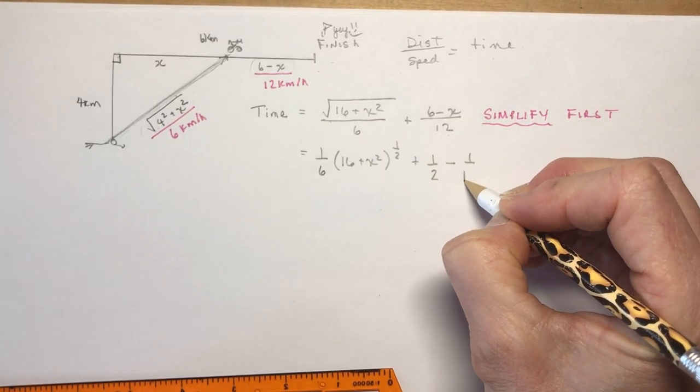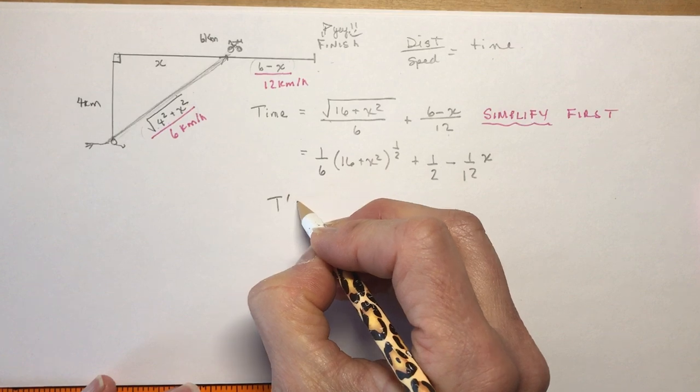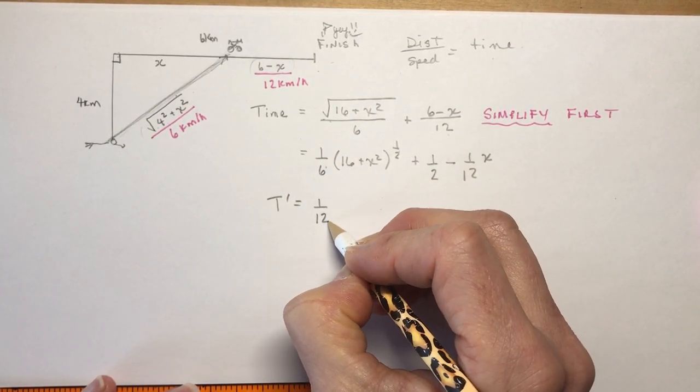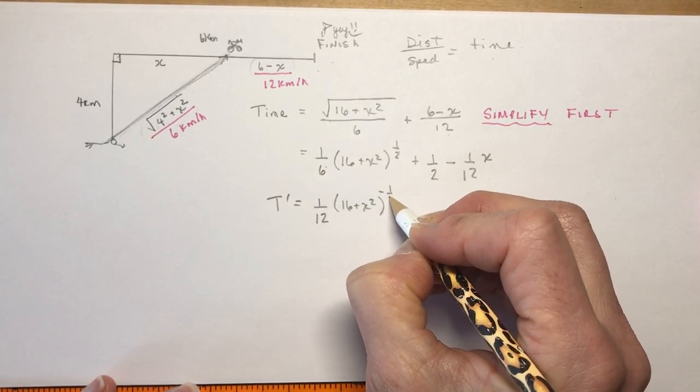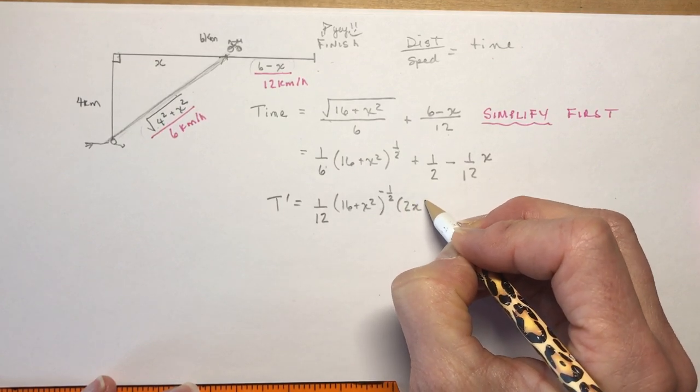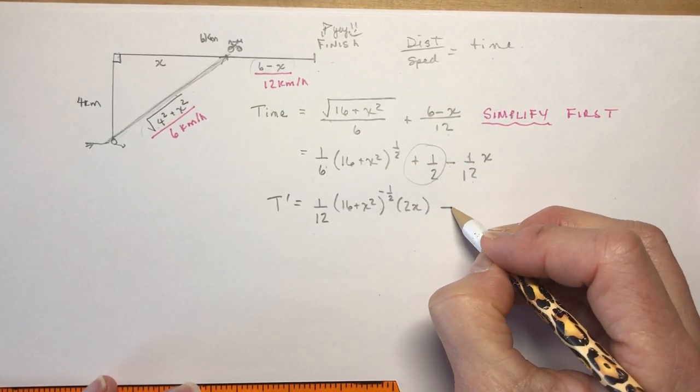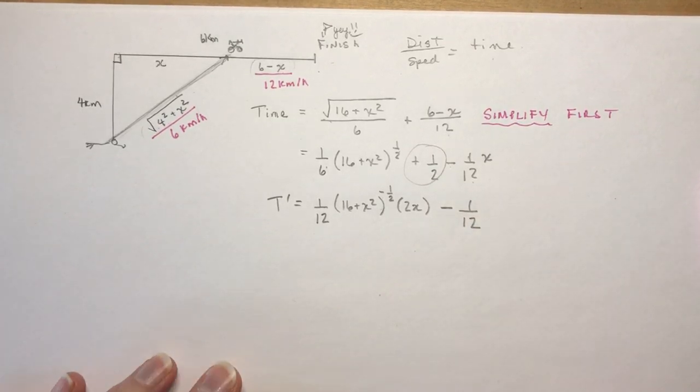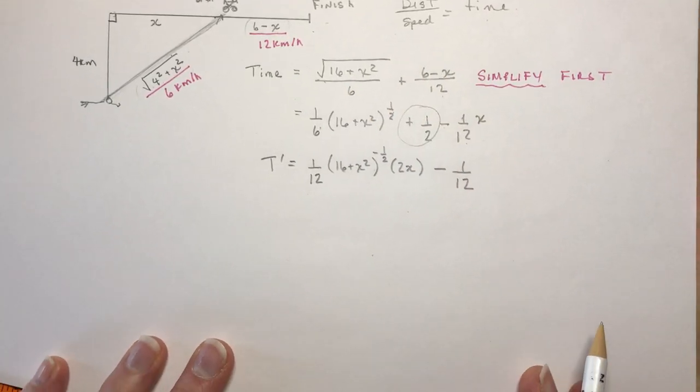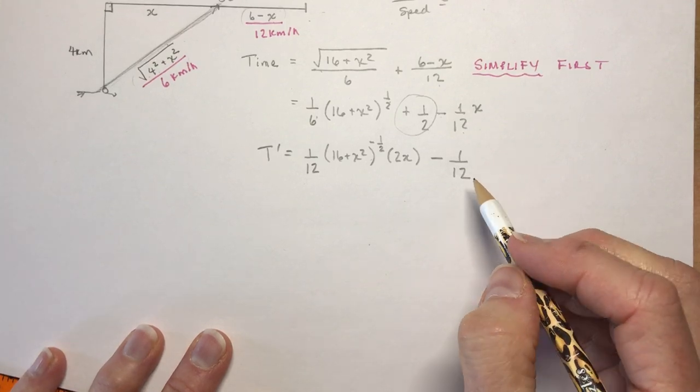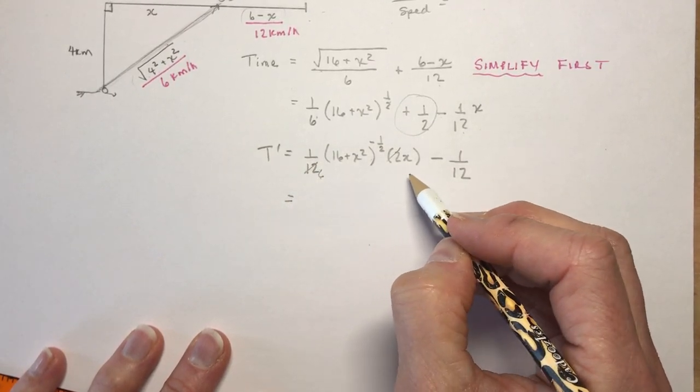If I do T' now I do a half times 1/6 is 1/12, and I have (16 + x²) reduce the exponent by 1 and multiply by the derivative of the inside which is 2x. The derivative of a half is 0 and the derivative of minus 1/12x is simply minus 1/12. See how much easier that is rather than trying to take the derivative of it in this format? Make your life easy. Once you've done several of them you have no problem.